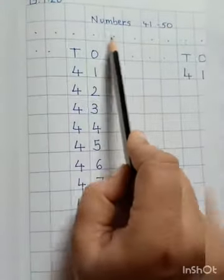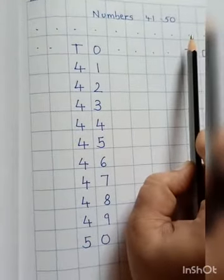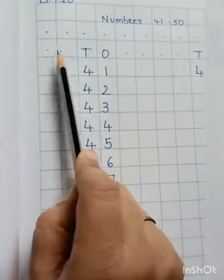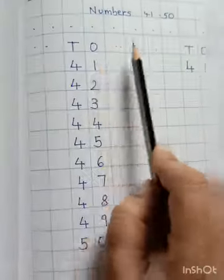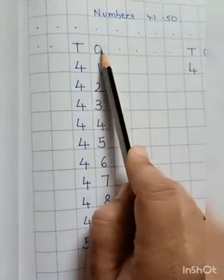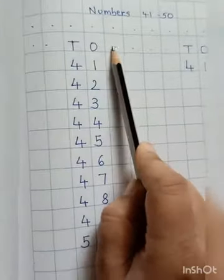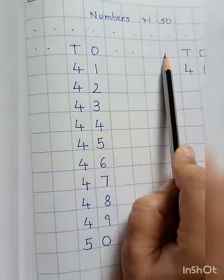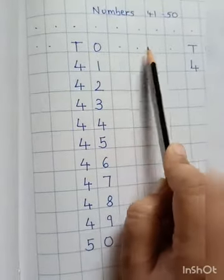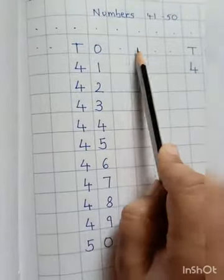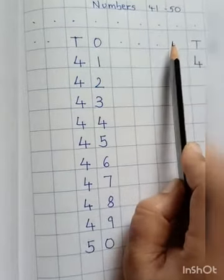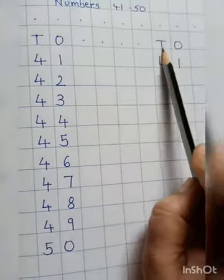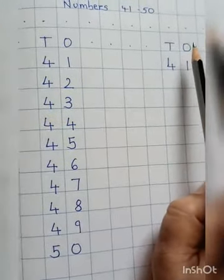In the second line you will put dots, meaning leave a line. Here again put two dots in two boxes, meaning these two boxes you will not write anything. Then write T for tens, O for ones, and then put 4 dots. That means leave four boxes. Then write again T and O to write one more time.